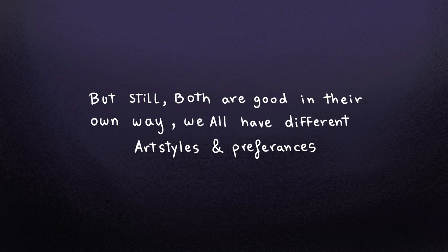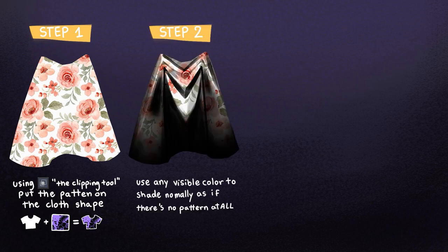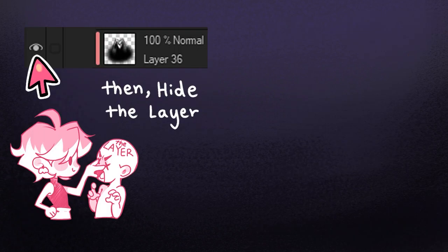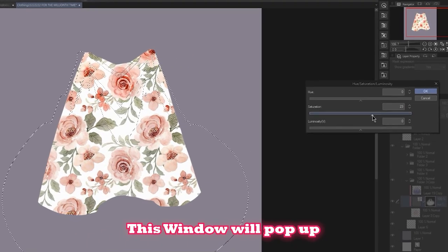To start with HSL: bring in a pattern you drew, put it above the color block layer, and use the clipping tool to mask it and take the shape of that color block. Then use any visible color to shade normally as if there's no pattern at all. After that, ctrl-click on that specific layer, then hide the layer. Right-click on the hidden layer — a menu will show up — and click 'New Correction Layer,' then 'Hue Saturation Luminosity,' which is the HSL layer.